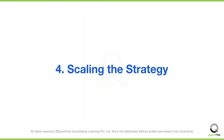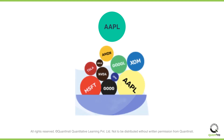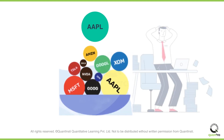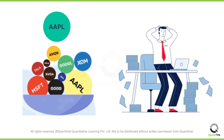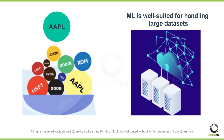Lastly, we can also use ML for scaling our strategy. The statistical approach can be used easily when we are just considering the data of a single stock. But scaling the strategy to multiple stocks might be difficult — the sheer volume of data would be overwhelming. ML, on the other hand, is well suited for handling large and diverse datasets, making it ideal for analyzing and identifying momentum in multiple stocks simultaneously.